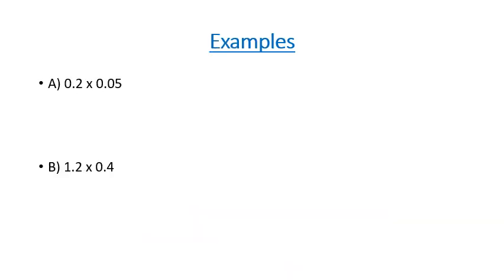Let's have a look at some example questions. In our first question we've got 0.2 times 0.05. We know if we move the decimal spot once, that gives us a whole number of 2. If we move it twice, that gives us a whole number of 5.